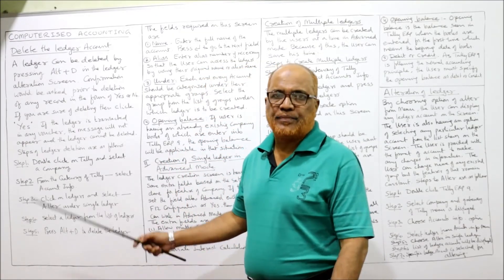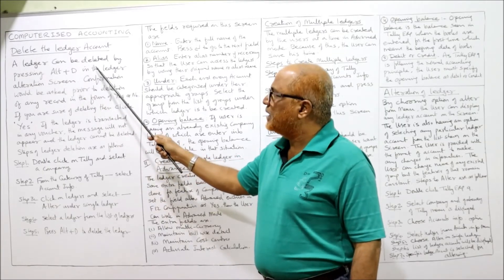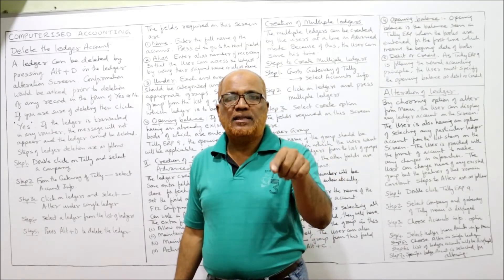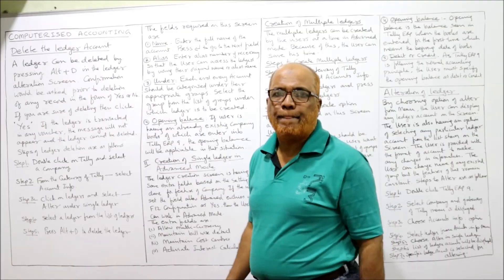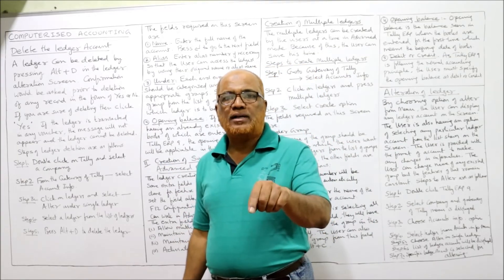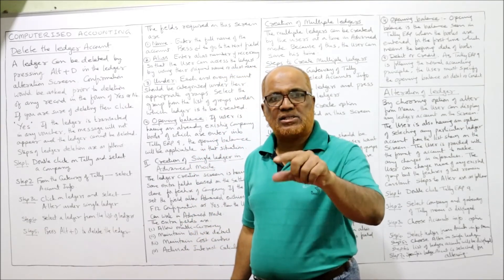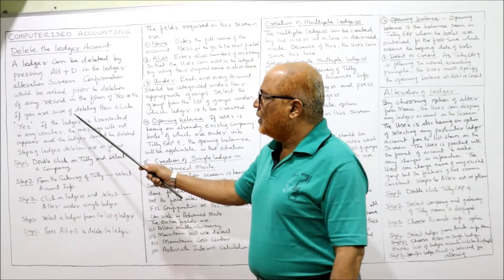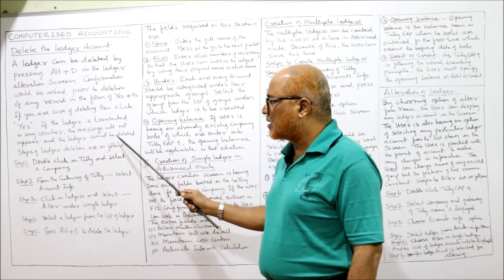Now the last topic is deleting a ledger account. A ledger can be deleted by pressing Alt+D in the ledger alteration screen. First go to the ledger alter screen, select the particular ledger, then press Alt+D — the account will be deleted. A confirmation message will appear asking Yes or No prior to deletion. If you are 100% sure you want to delete, press Yes. Note: if the ledger is transacted in any voucher, the deletion message will not appear and the ledger account cannot be deleted.